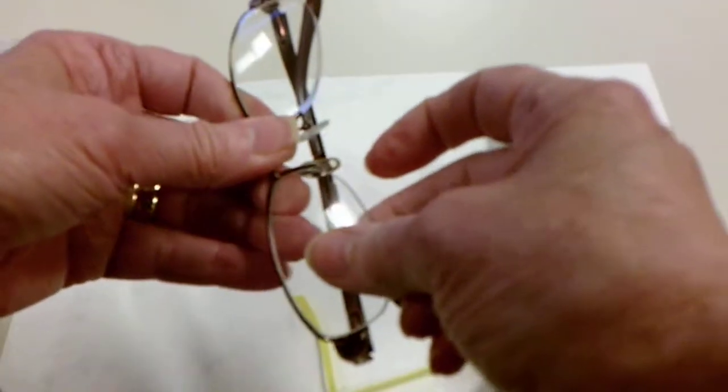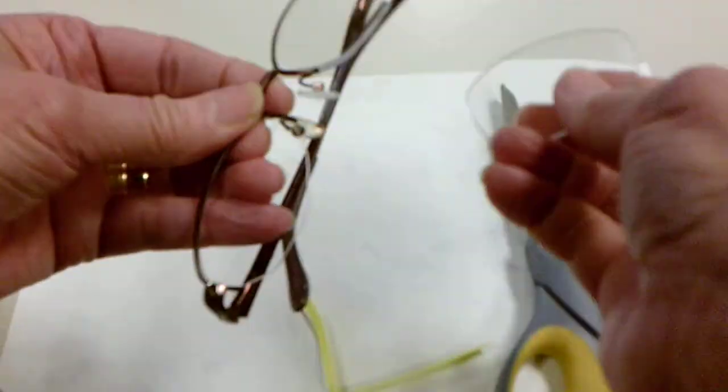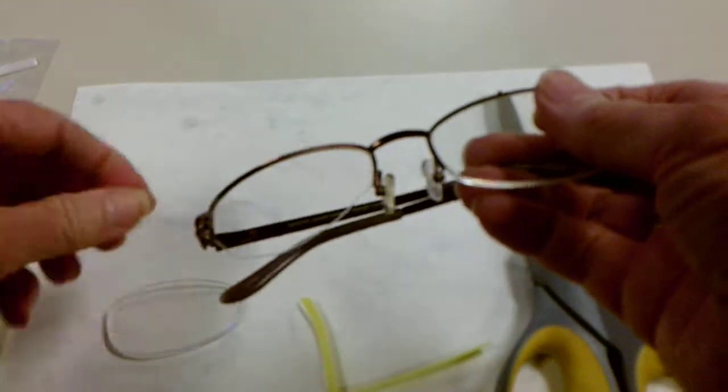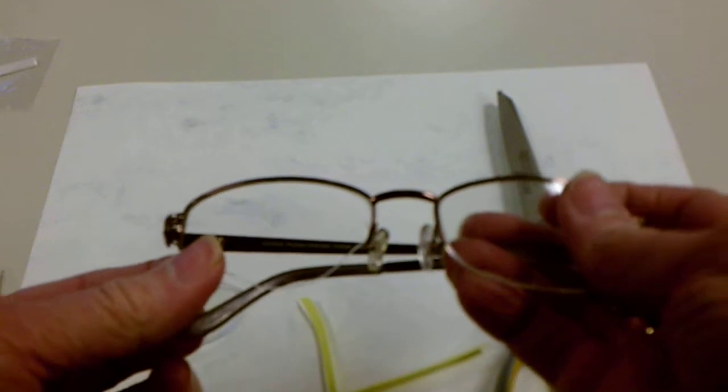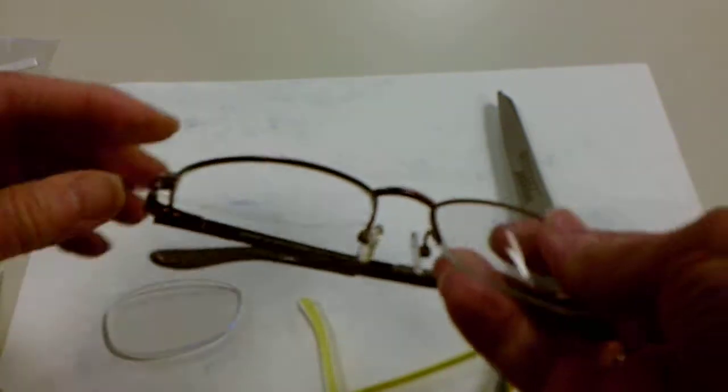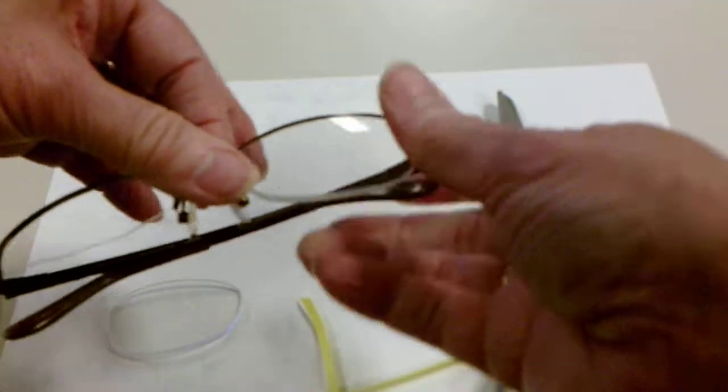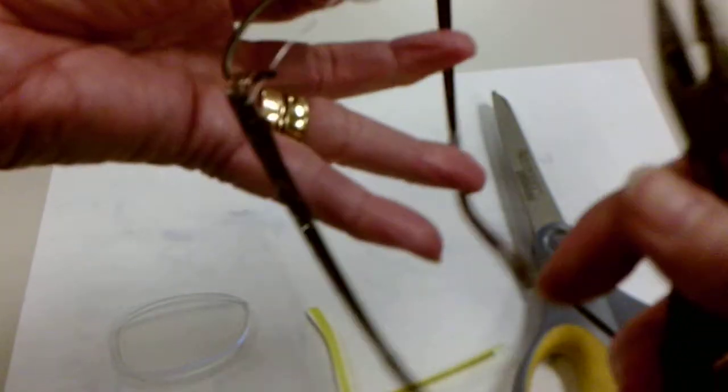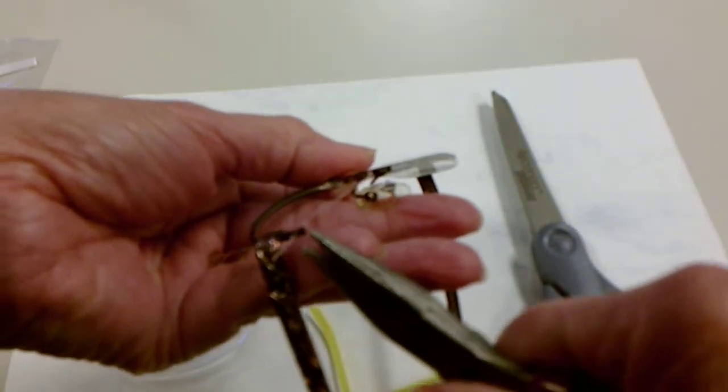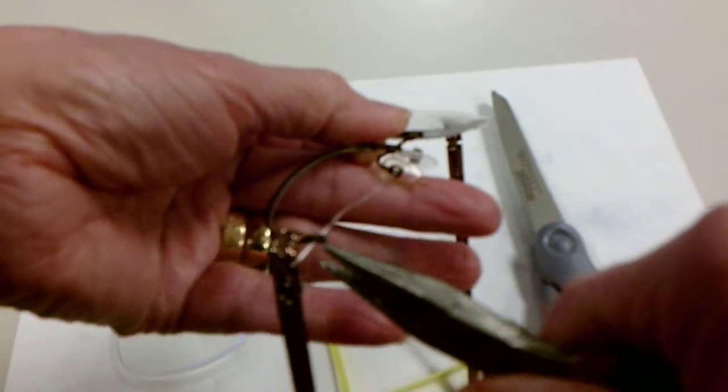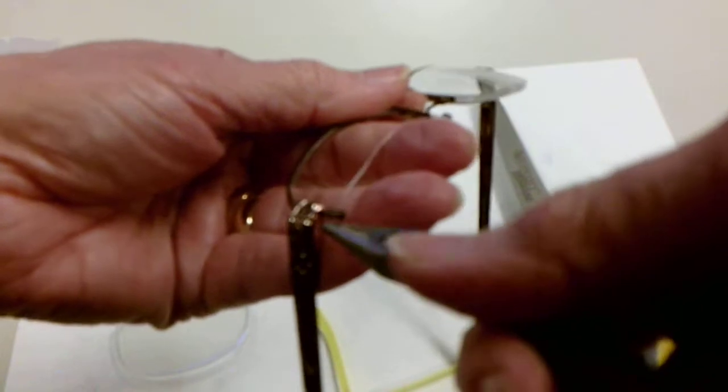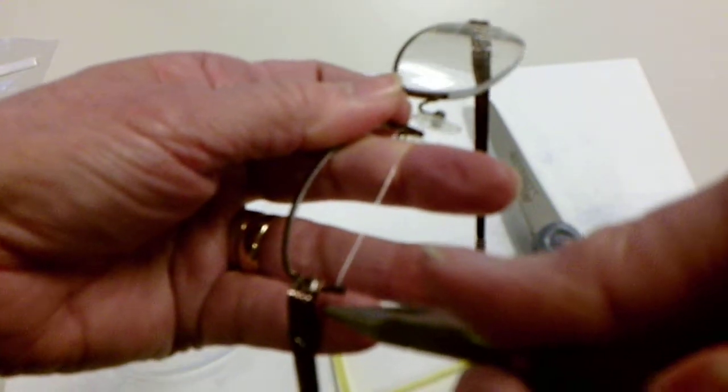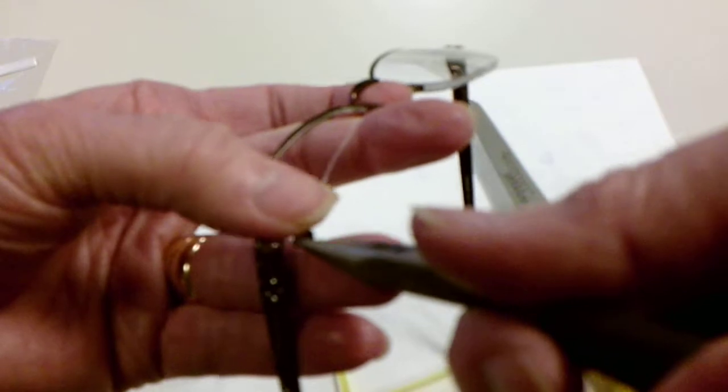Now we're going to remove the lens and thread this outer section back in through the upper hole. Here's where I like to use my needle nose to thread it back in. So here's our little piece. We're going to thread it back in the other hole so it will be able to be held in by tension.